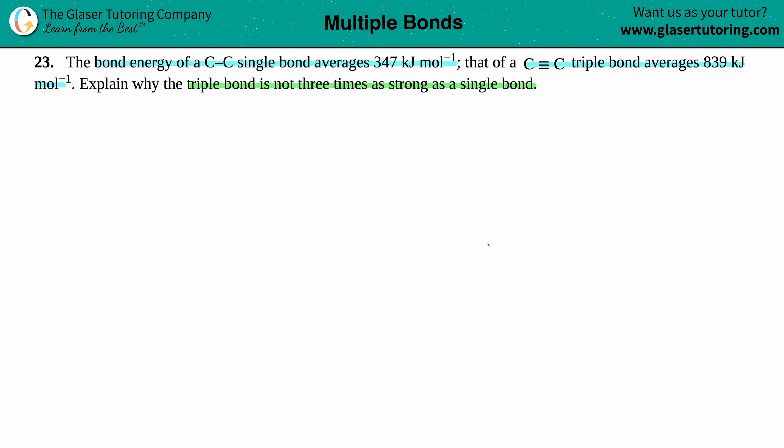Okay, good question. So when we break it down, right, it seems like we have a C single bond, and they're telling us that this is 347 kilojoules per mole. Okay, beautiful.